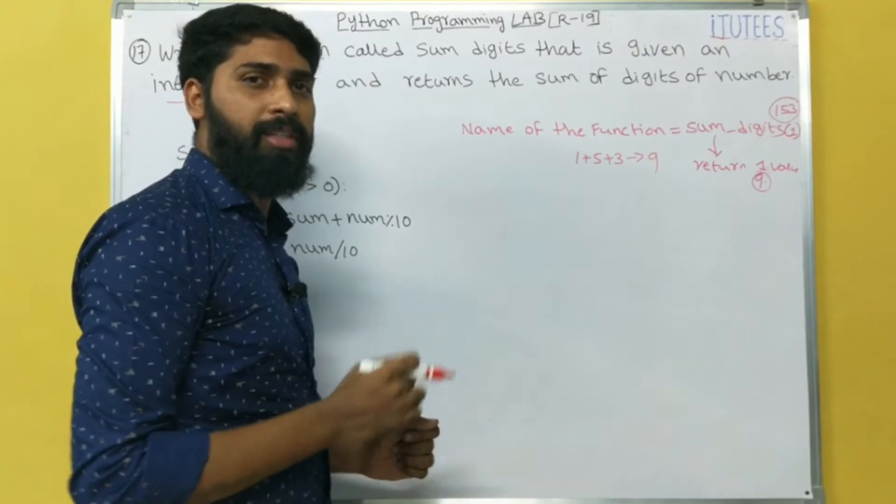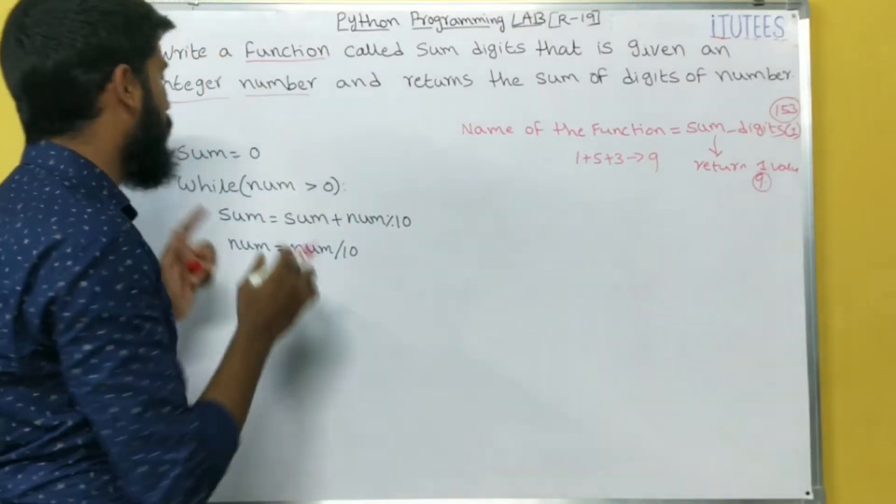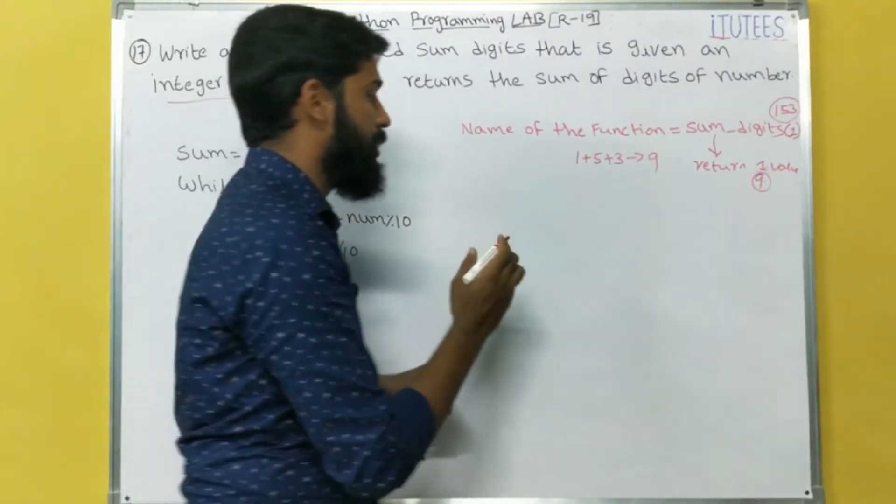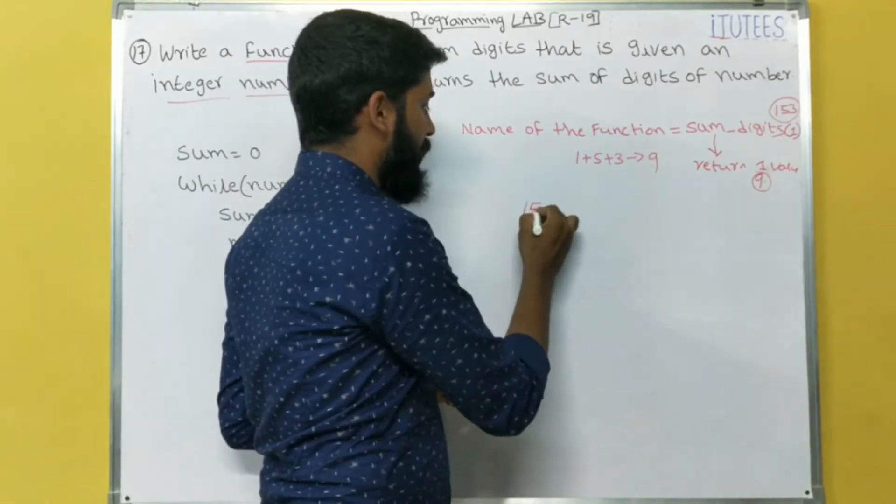Okay. Now, up to now, we write the programs. In this program, we are going to write one function. So first, we see the logic. So how we can find the digits of a number?